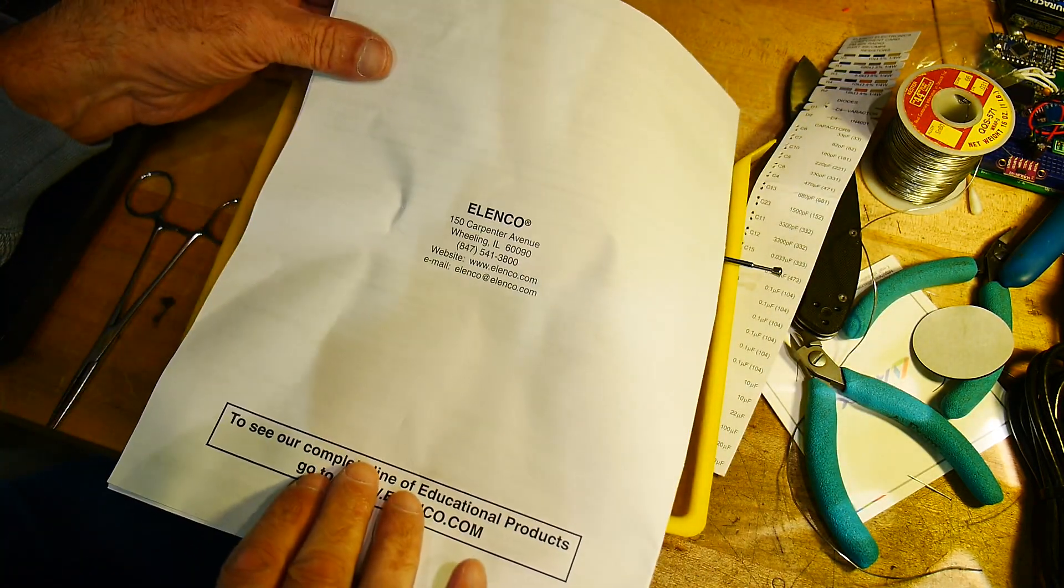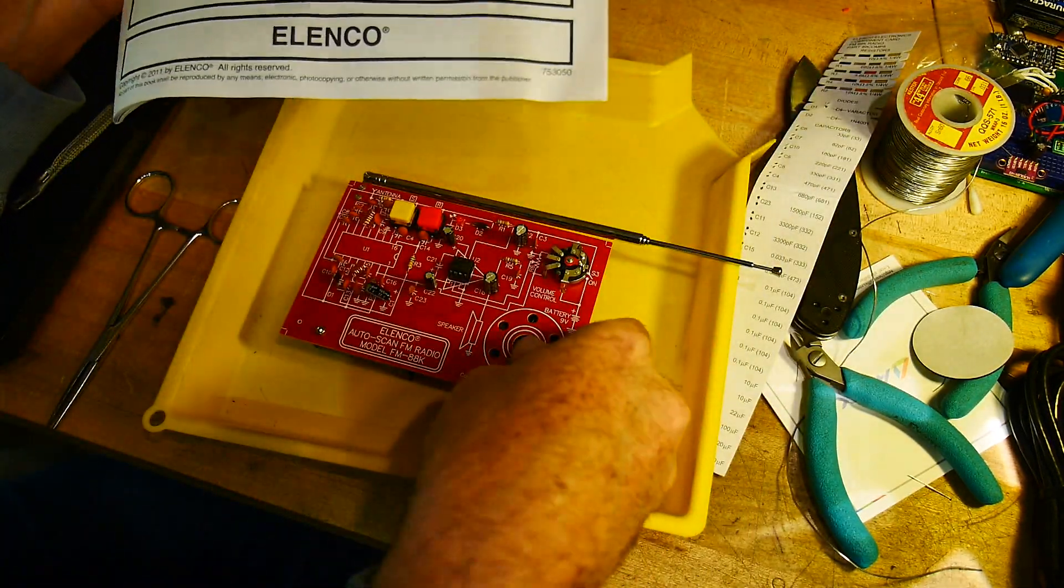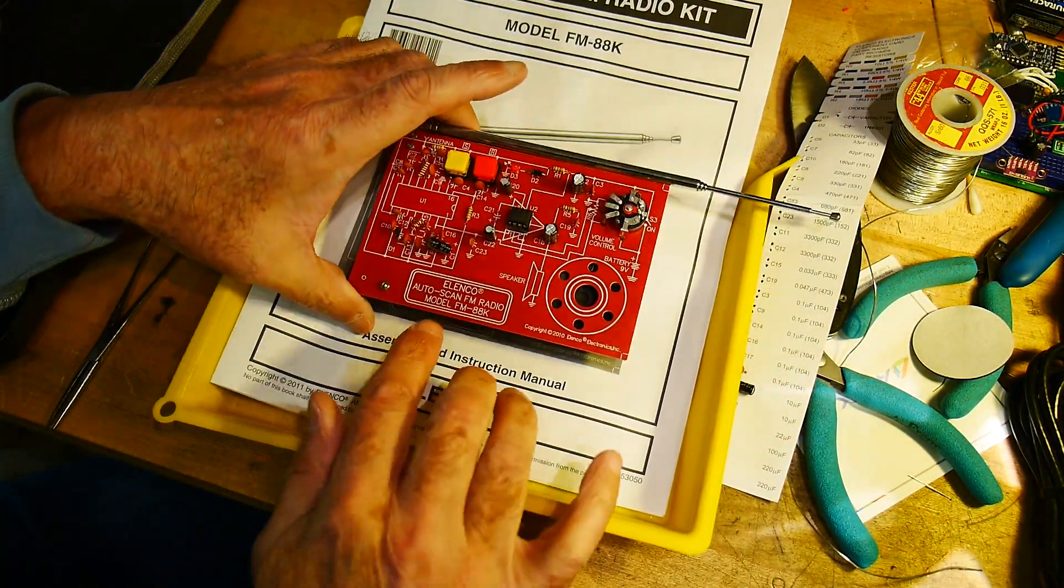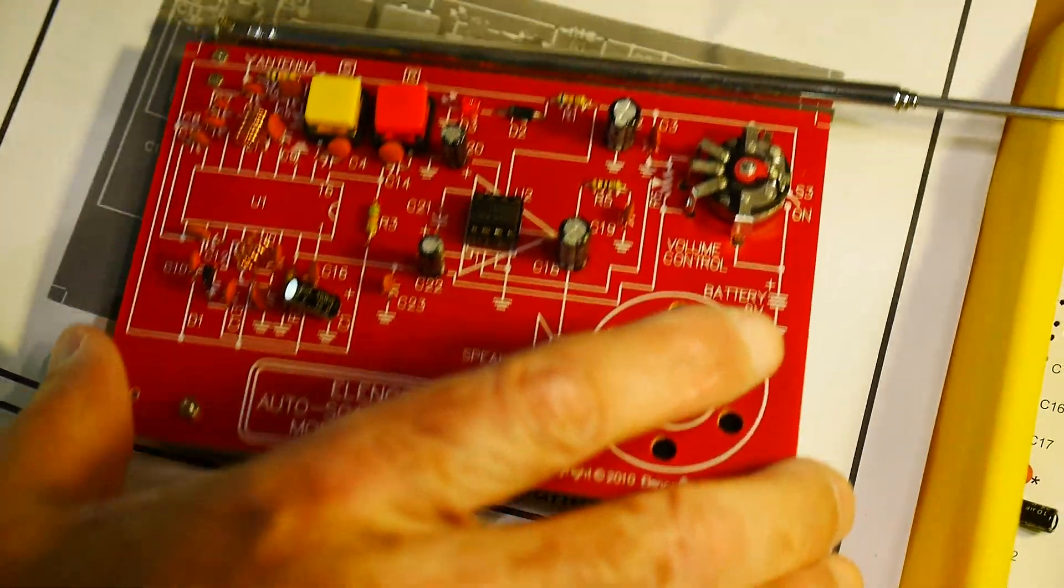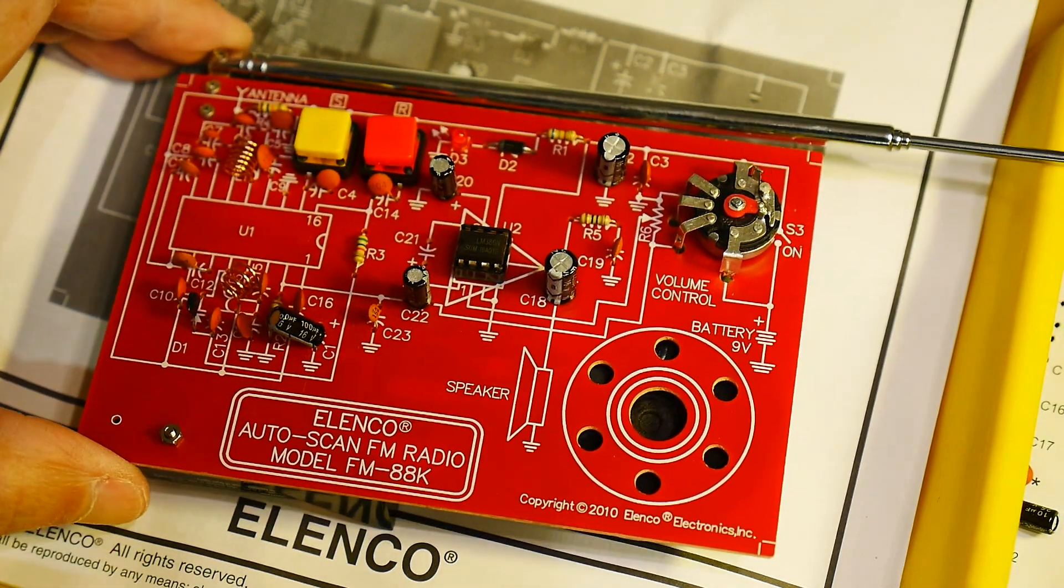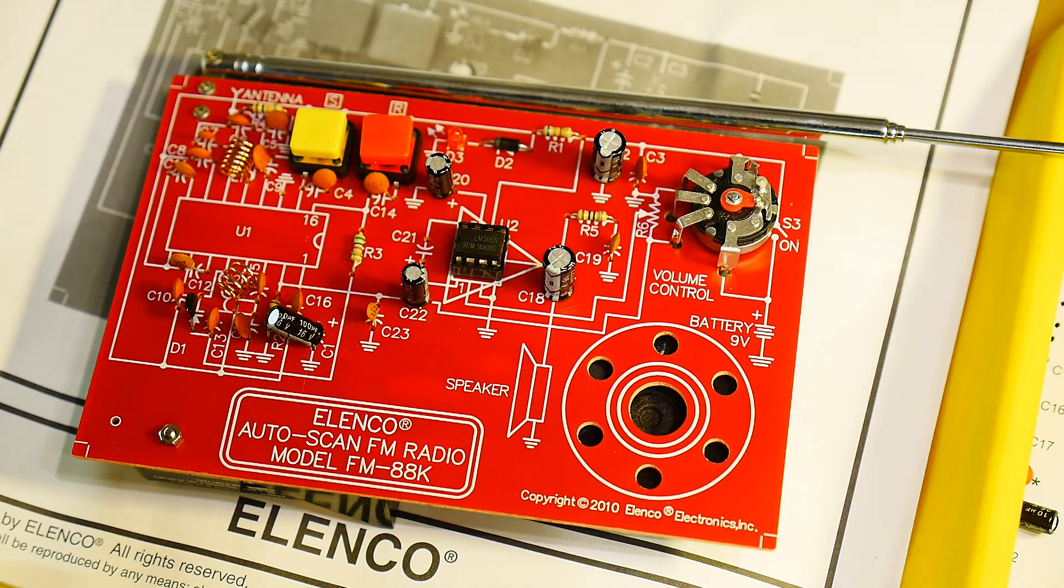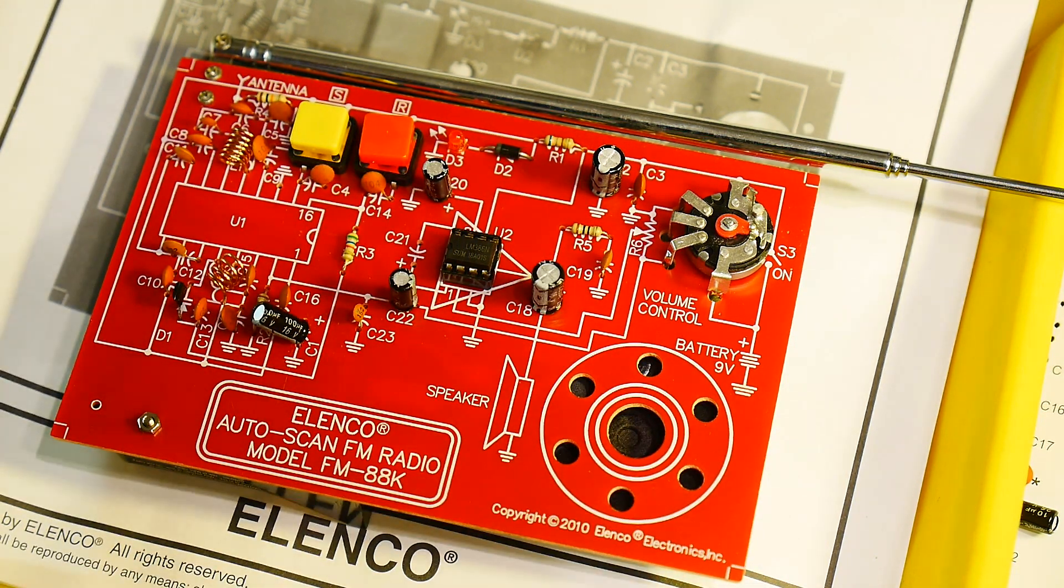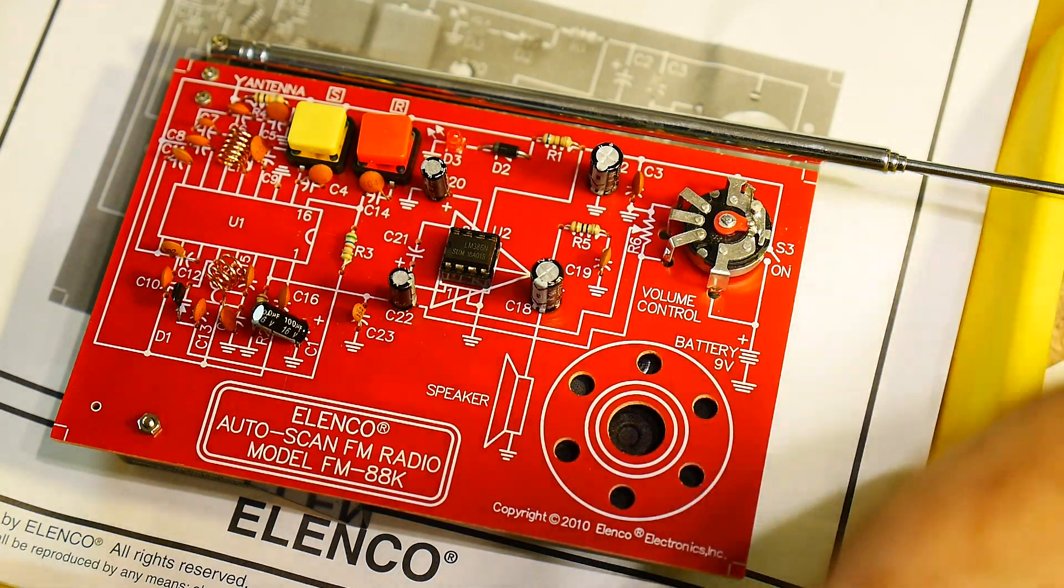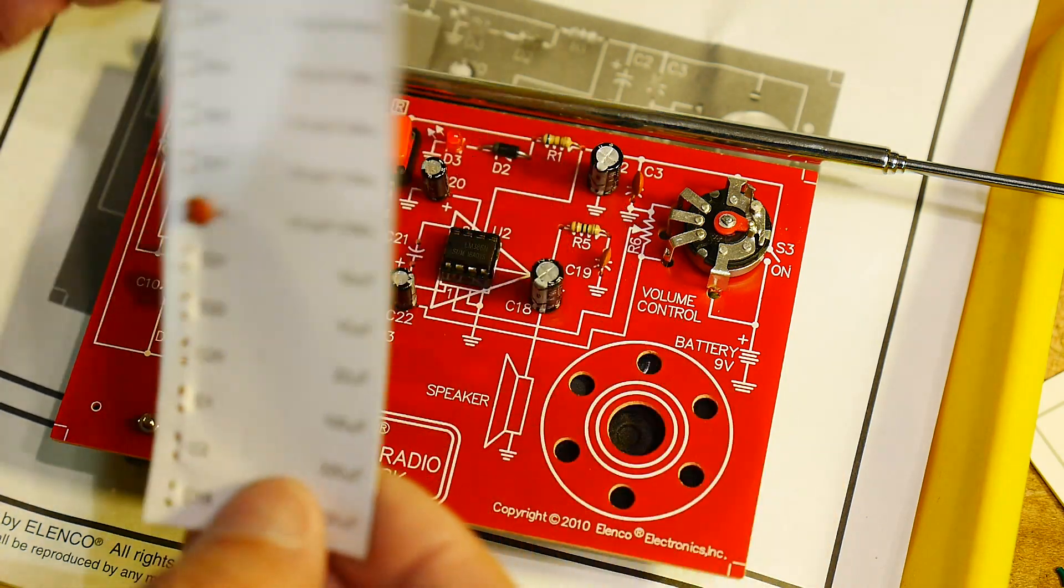So, yeah. Highly recommended. Go to www.elenco.com. And, again, this is the model FM 88K. Nice little radio kit. I believe they make other kits as well for radios. I believe they have an AM radio. Maybe some other radios. But, this one's really high quality and the construction with all of the parts labeled and everything. This is much, much better than any Chinese kit that you'll get.